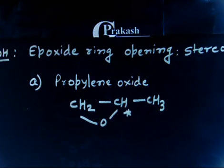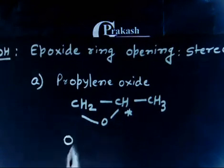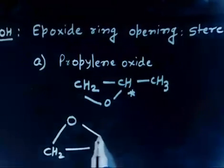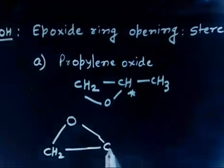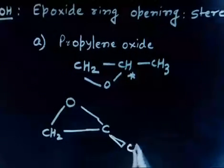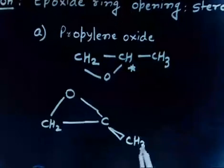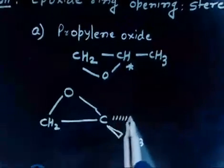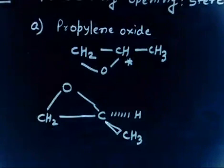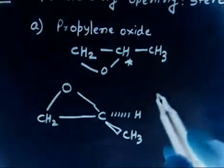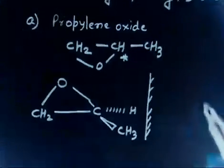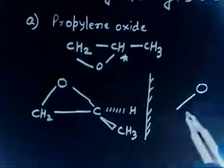Let us put oxygen on the top. I can have one structure like this: OCH₂, then here you have carbon. In one case CH₃ is up, so we have CH₃ on the upside and hydrogen on the downside. This is one molecule. The second molecule will be the mirror image of the same.